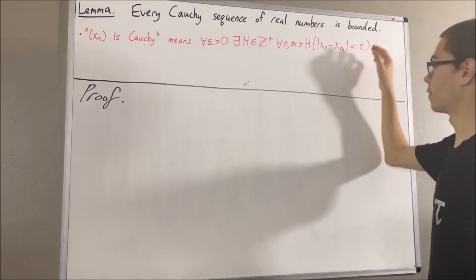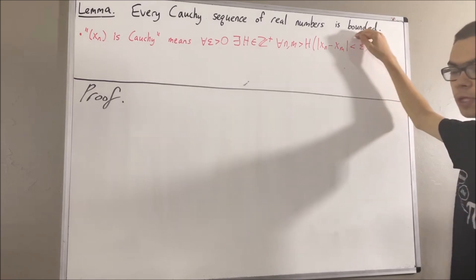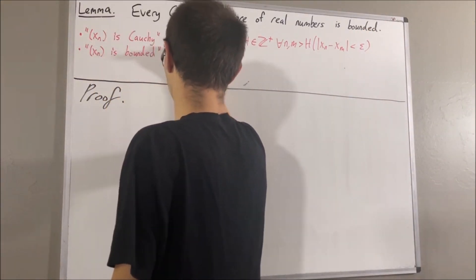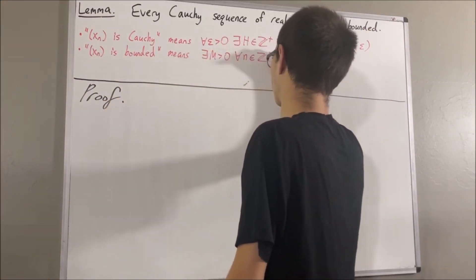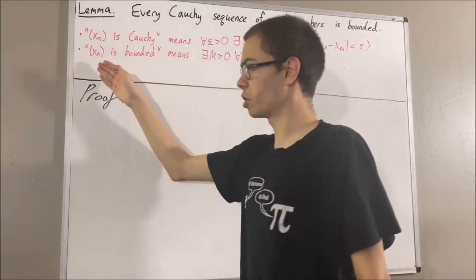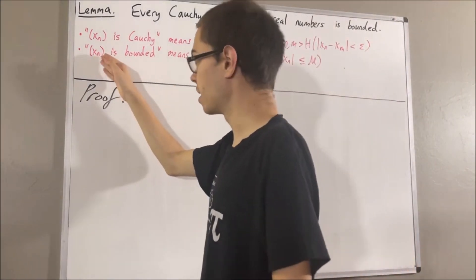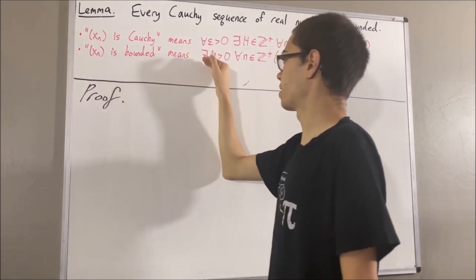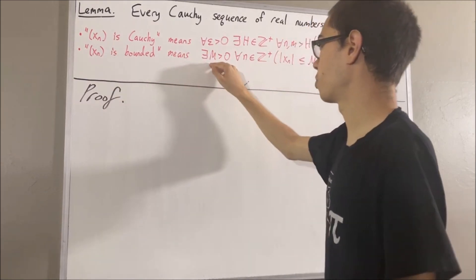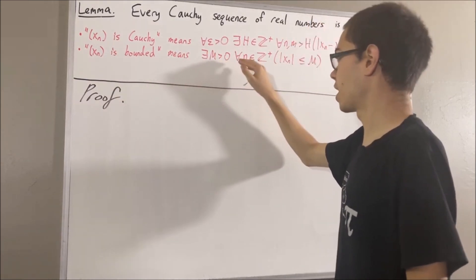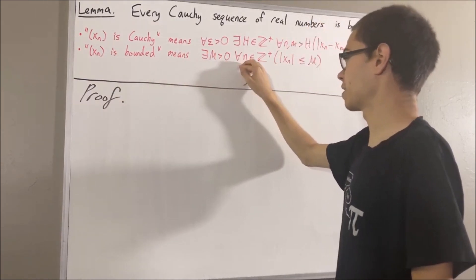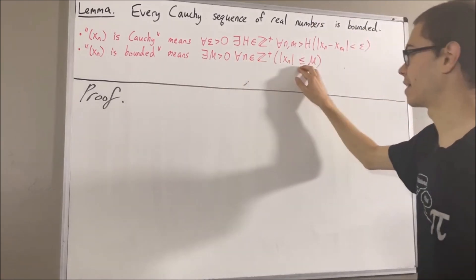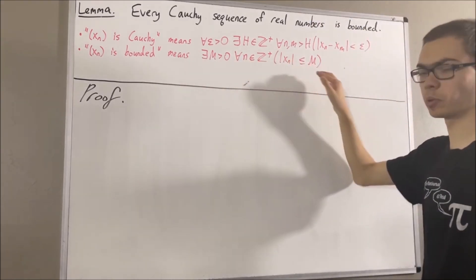Now, the definition of a bounded sequence of real numbers is as follows. Given a sequence of real numbers xn, to say that xn is bounded means there exists a positive real number capital M such that for all positive integers n, the absolute value of xn is less than or equal to capital M.